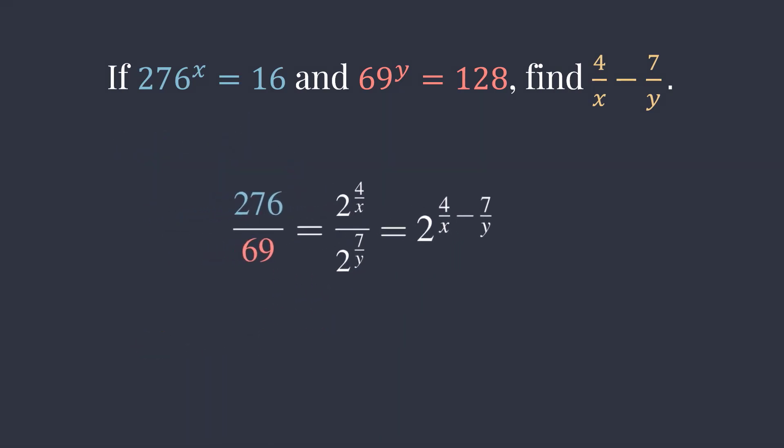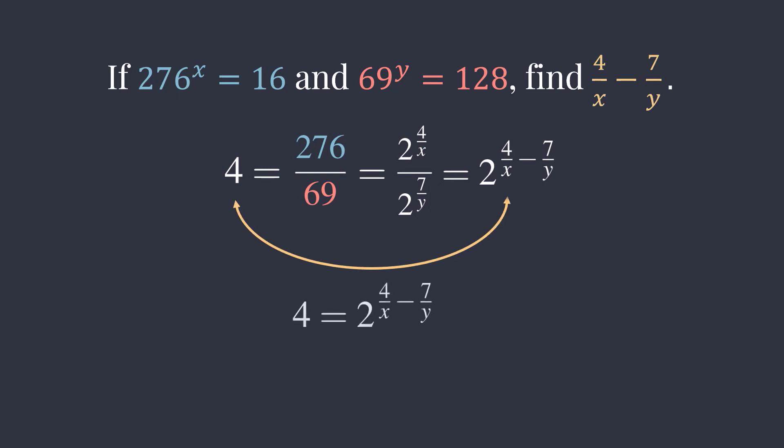See that on the left side of this equation, 276 divided by 69 is 4. So, we have 2 to the quantity of 4 over x minus 7 over y equals 4.